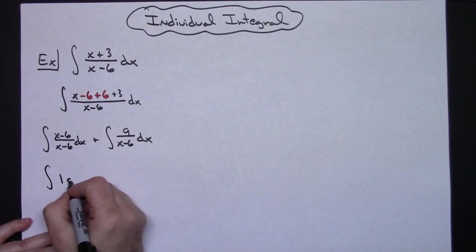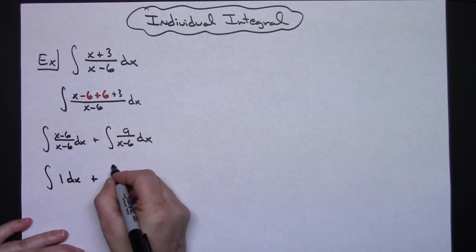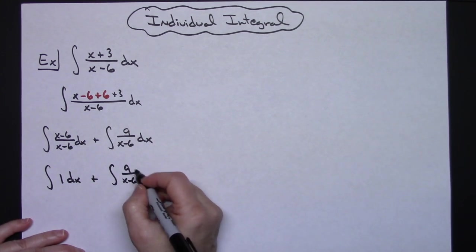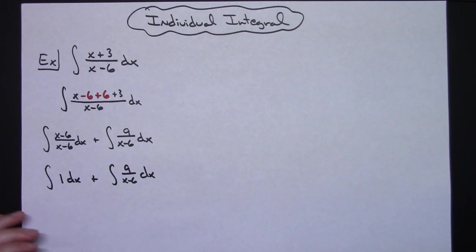And then obviously this goes to a 1, so that would be the integral of 1 dx which is real simple to do there, and then this over here you can take that 9 out and then just do a 1 over the x-6.